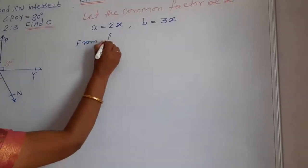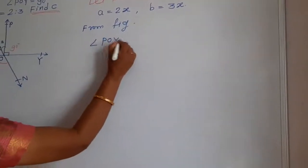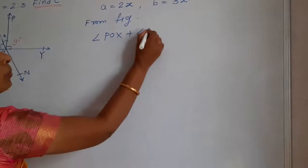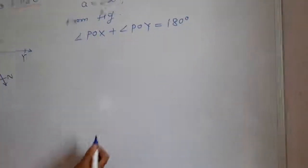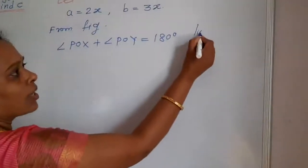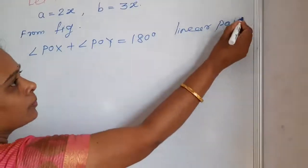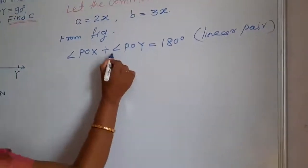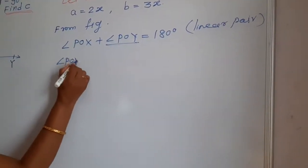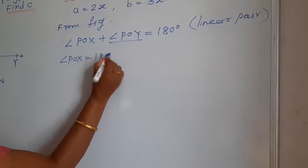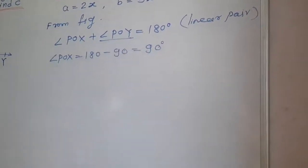From the figure, angle POX plus angle POY equals 180 degrees — both are linear pair angles. But here angle POY is 90 degrees, so angle POX equals 180 minus 90, that is 90 degrees also.